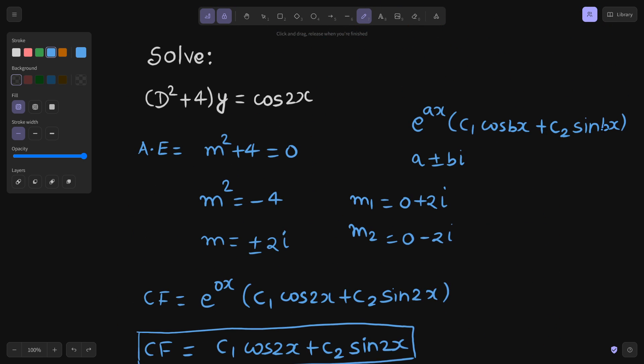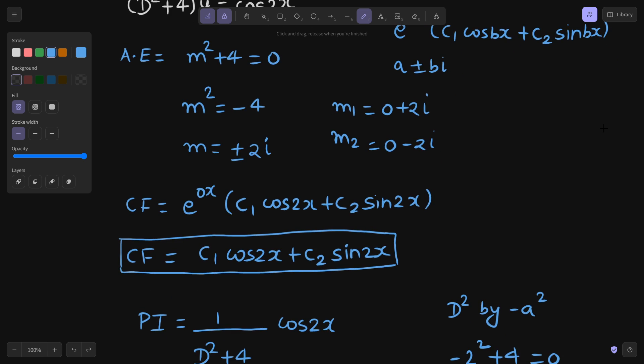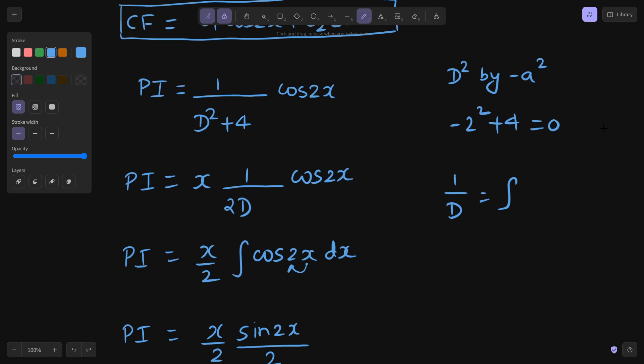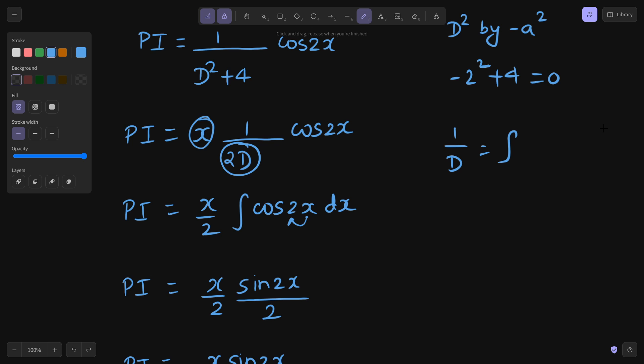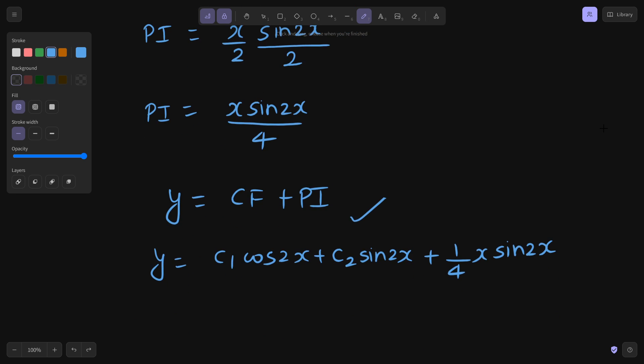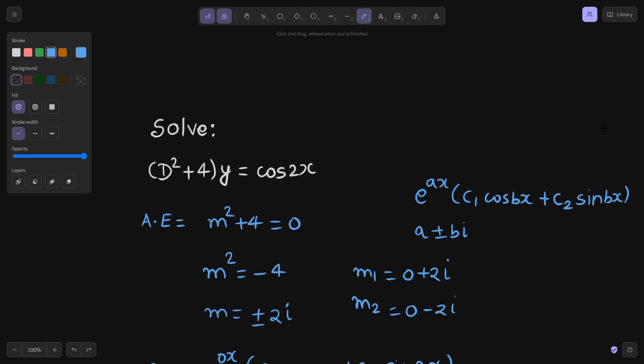First find auxiliary equation. From there, the roots were imaginary to find the complementary function like this, and then particular integral. Because denominator was becoming 0, we multiply by x. Differentiate the denominator, and 1 by D is similar as integral. We proceeded and we finally got y equals CF plus PI. You can find large number of problems in the playlist, Ordinary Differential Equation. Go and watch that out. Thanks again.